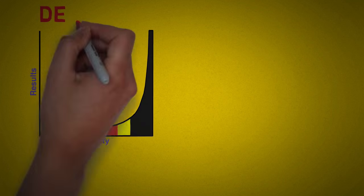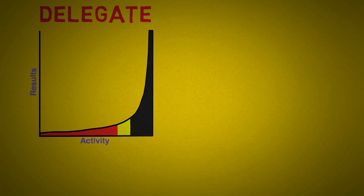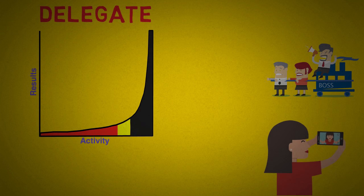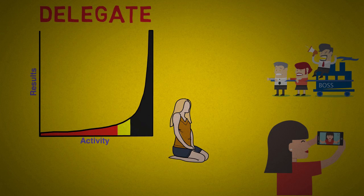The second D is DELEGATE. In other words, get someone else to do it. Some people are egotistical and want to do everything. Sometimes, delegation requires humility and a recognition that you are not the only competent person in your organization or family.